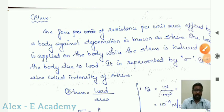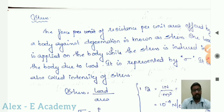When a body is subjected to any sort of external load, some stresses and strain will be created in the body due to the externally applied load. We will discuss what is stress, what are the types, and also about strain. The force of resistance per unit area offered by a body against deformation is known as stress. The load is applied on the body while the stress is induced in the body due to the load. It is represented by sigma, and it is also called intensity of stress.